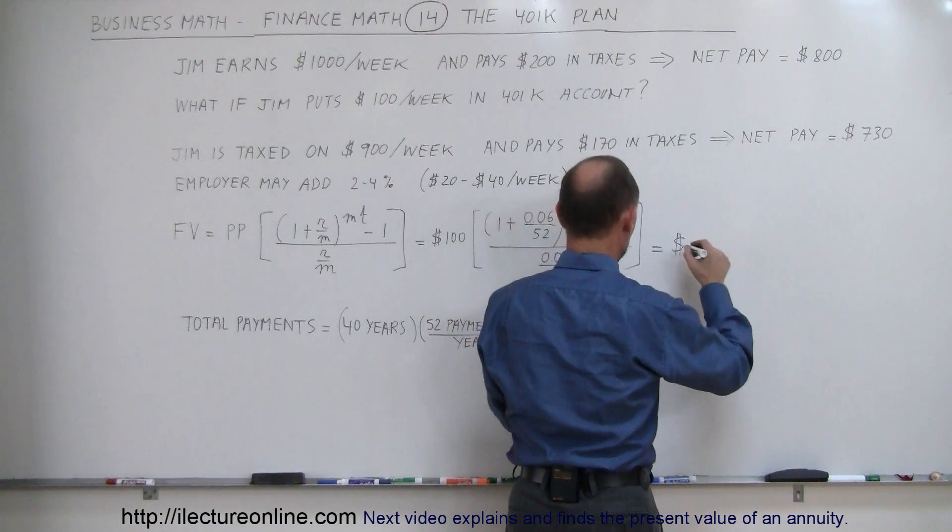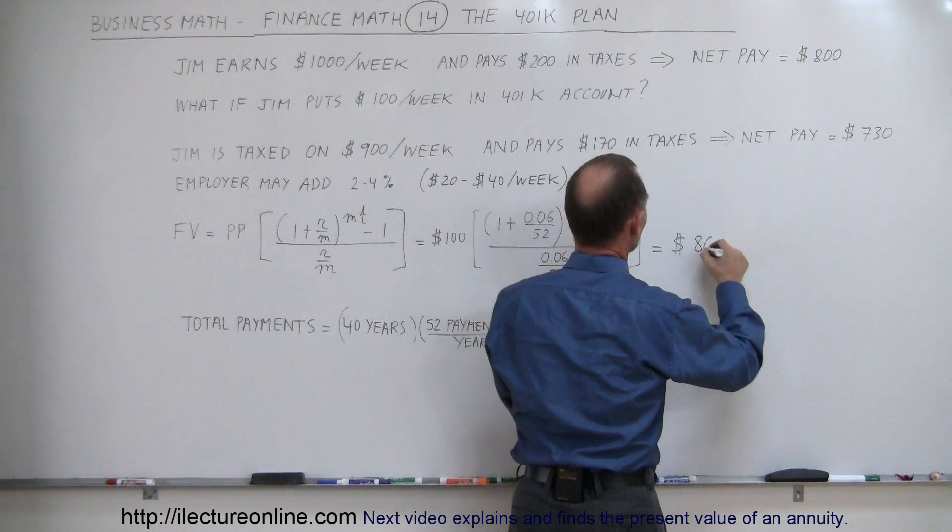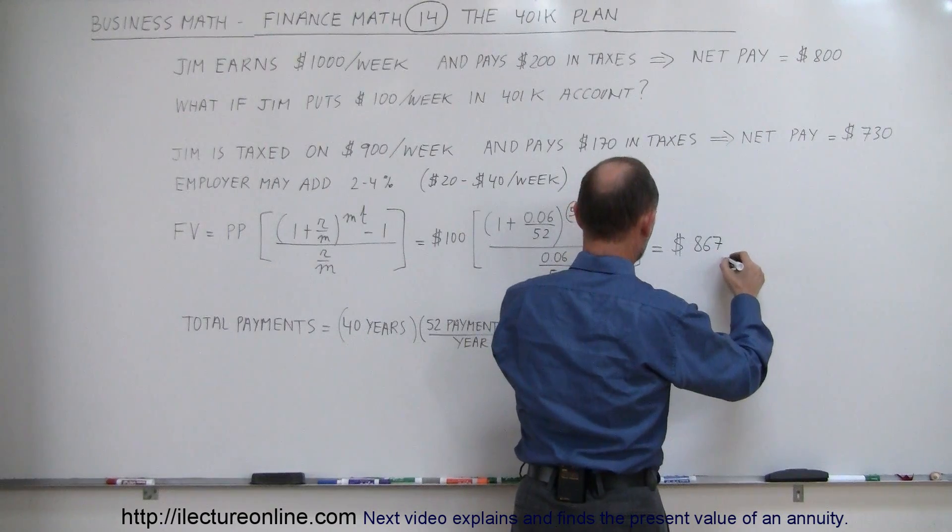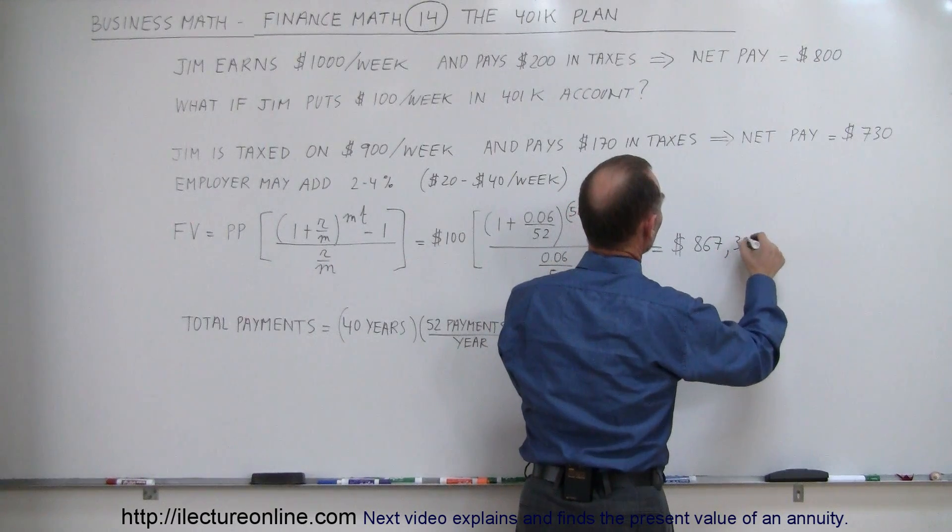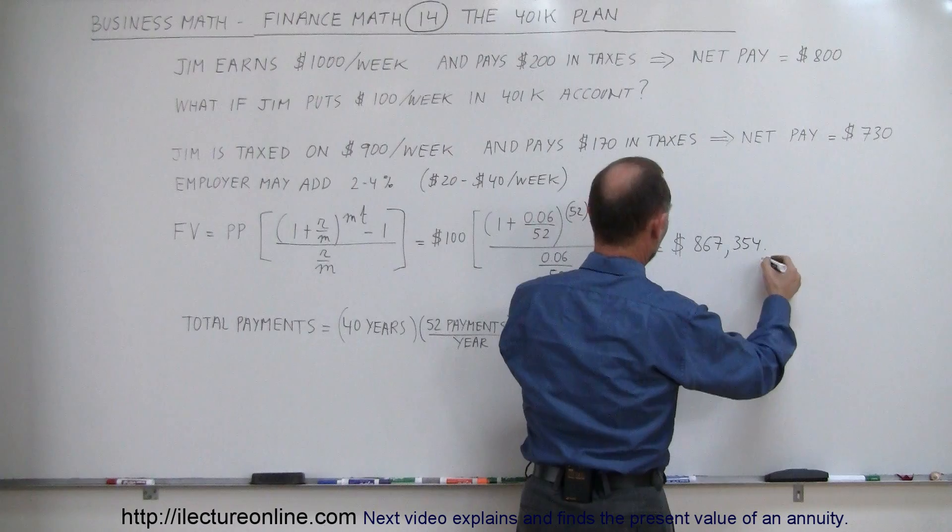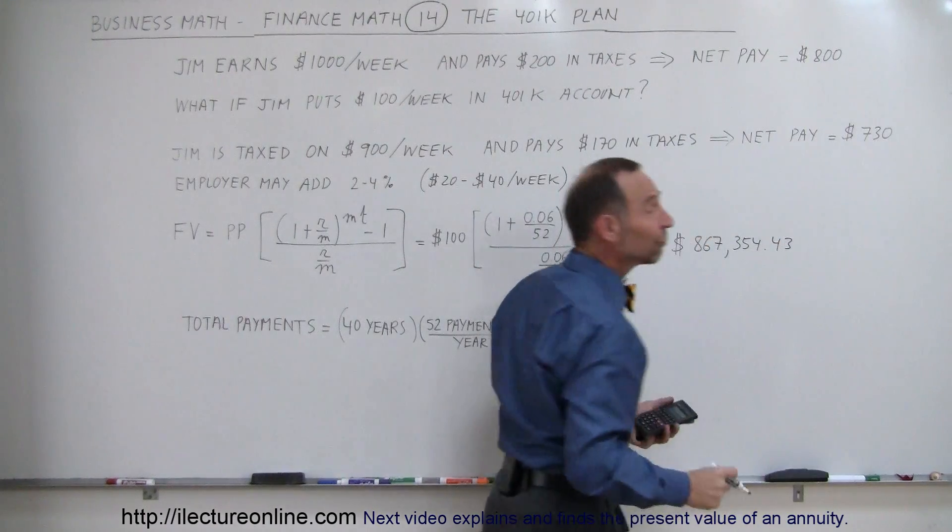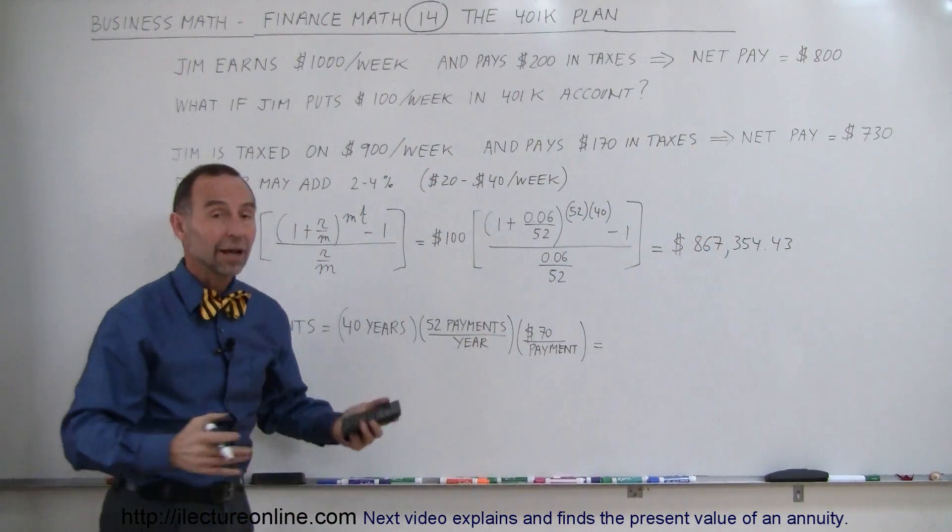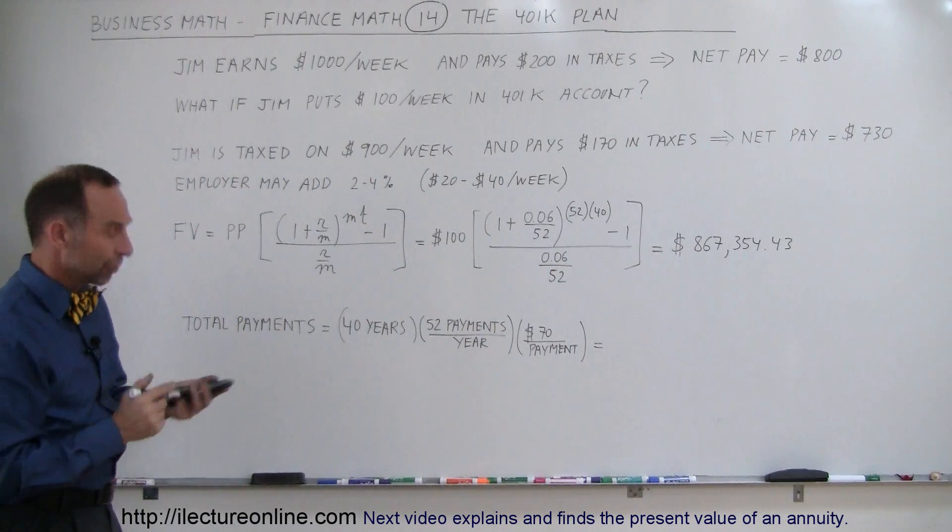And so, that person, Jim would have, after 40 years, $867,354.42 in his 401k. And then he can retire and start drawing money out of that for the rest of his life.